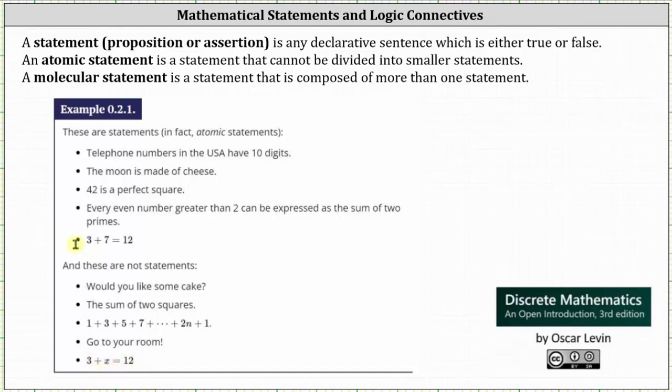Notice 3 plus 7 equals 12 is a statement, but 3 plus x equals 12 is not a statement because we are not given a value of x to determine whether the sentence is true or false.